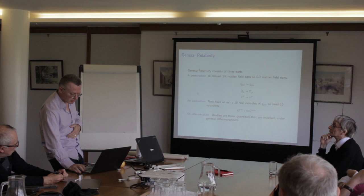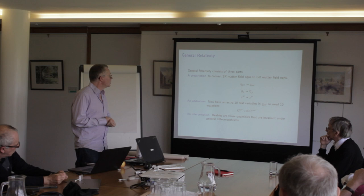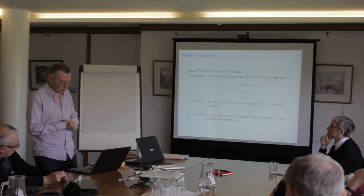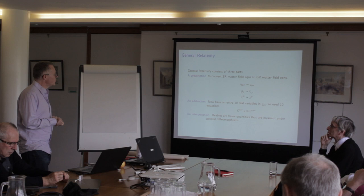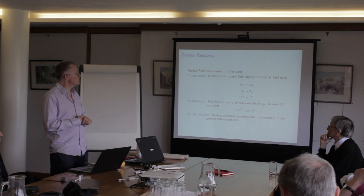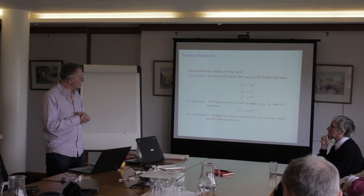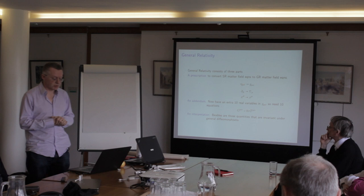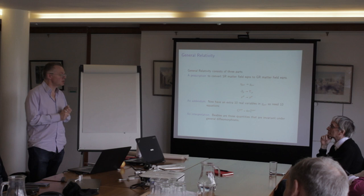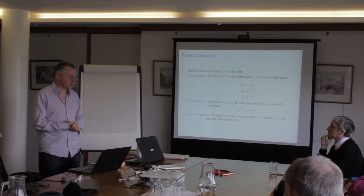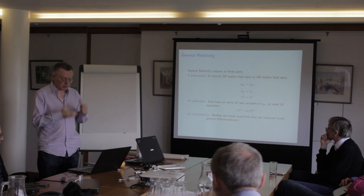The other thing you get is an interpretation. The beables — which people in the general relativity community often call observables, though I think that's the wrong name — the ontologically real quantities in the theory are those that are invariant under general diffeomorphisms. You have a solution, and to find what is physically real, you find quantities invariant under general diffeomorphisms. This interpretation is suggested by the formalism; there isn't the same sort of disagreement about GR as there is about quantum theory — pretty much everyone agrees. But it's still radical.